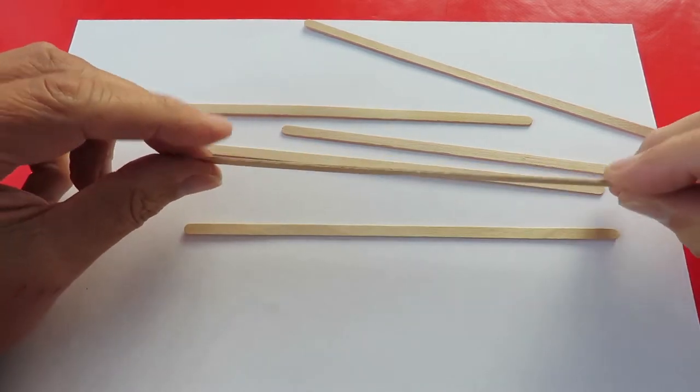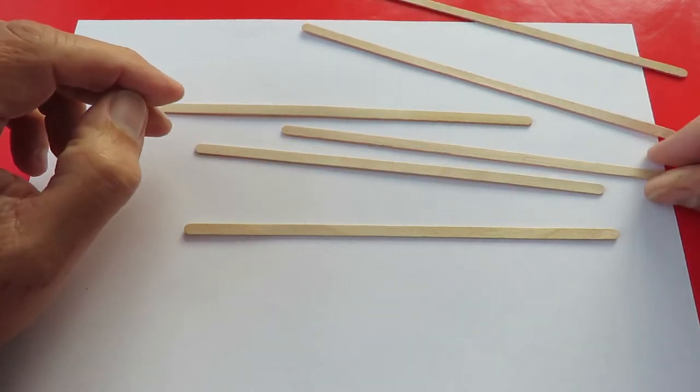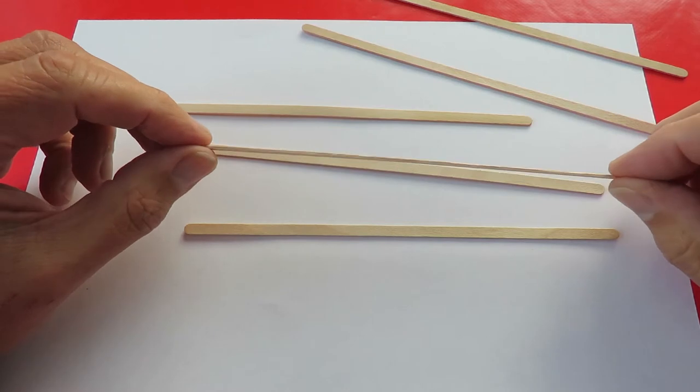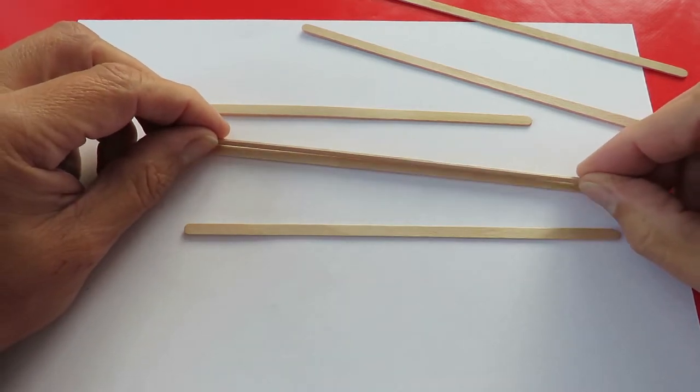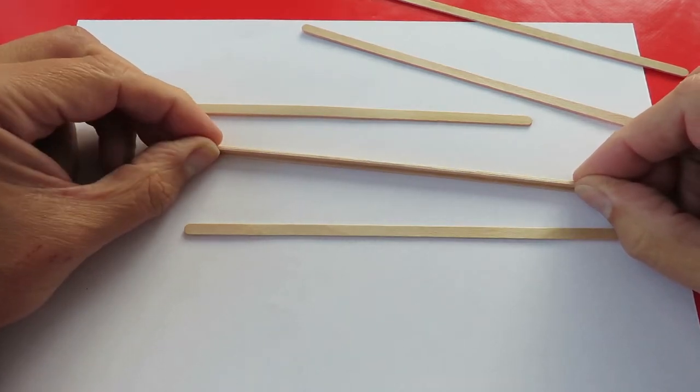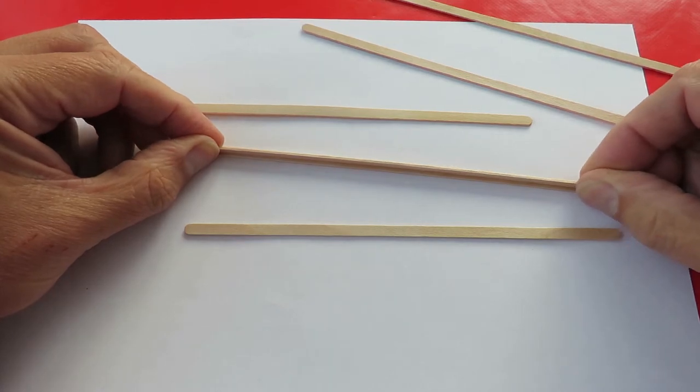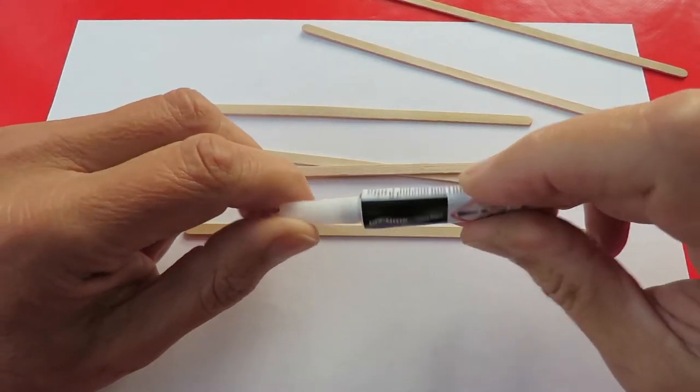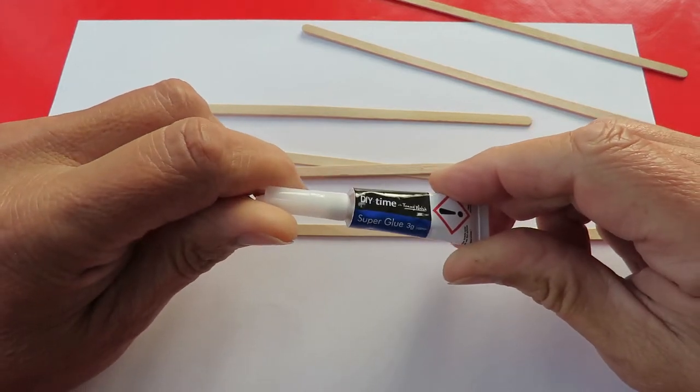But the first thing I want to do is choose a couple of these coffee stirrers and I'm actually going to glue them in a T-shape to make it more rigid. I'm going to use this Poundland Super Glue to do it.